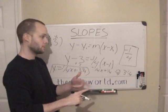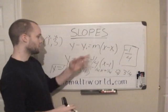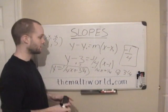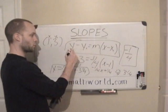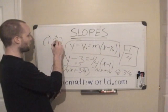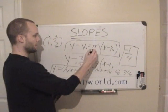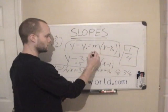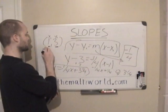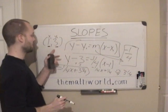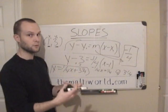And so a lot of times they'll give you two points on a graph in a linear equation and say we want you to find the slope, which we did, and then we want you to find the equation for this linear equation. So all you have to do is use this equation right here, y minus y1 equals m, which is our slope, times x minus x1, x1 being our point. And again, it doesn't matter which points you use.